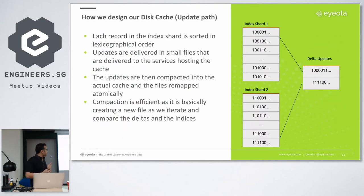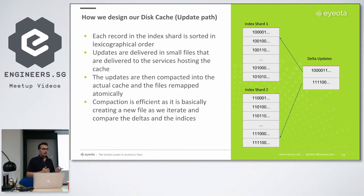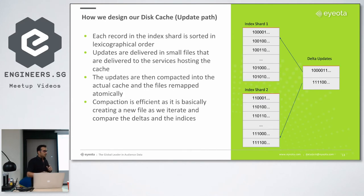For the cache update path, updates come in on a separate path altogether. One reason we split into shards was to enable updates. With one big file, updating would be very problematic. Similar to how Cassandra handles compaction, we generate a new shard while the process is still using the old shard. Once the new update is available, we swap the files and the process switches to using the new shard. That is how we apply deltas to the cache.